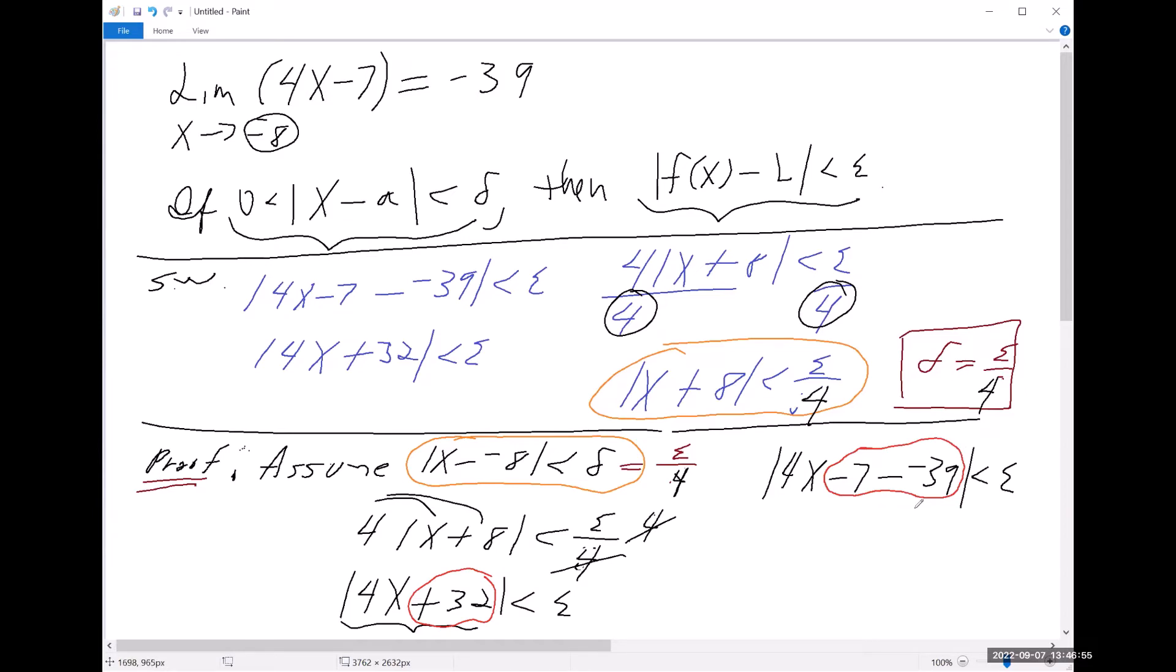And that's where we end because we've actually shown that we can arrive at f of x minus L is less than epsilon if we let delta be epsilon over four. So we're after the epsilon, but I also went ahead and showed you how to get the proof.